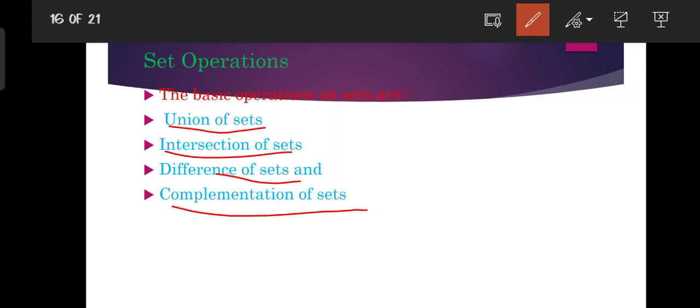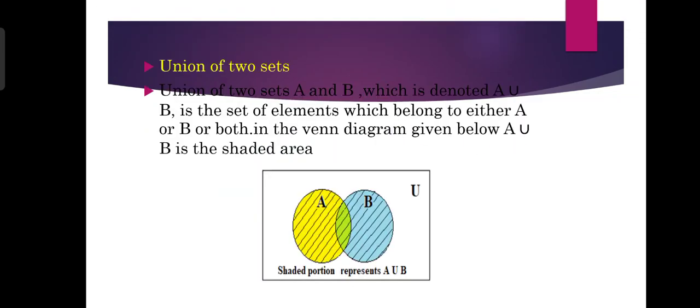First one is Union of the set. Union of two sets A and B, which is denoted by A-Union B, is the set of elements which belongs to either A or B or both. In the Venn Diagram given below, A-Union B is the shaded area.